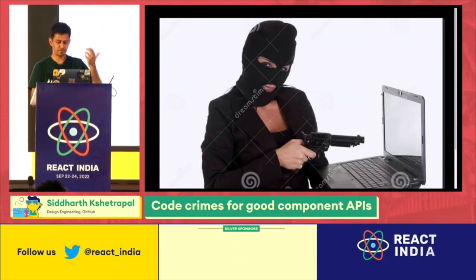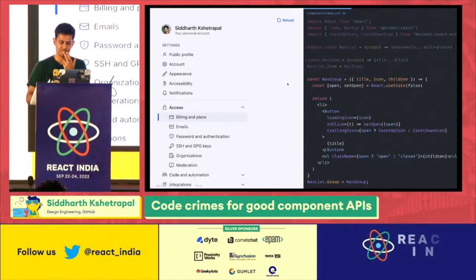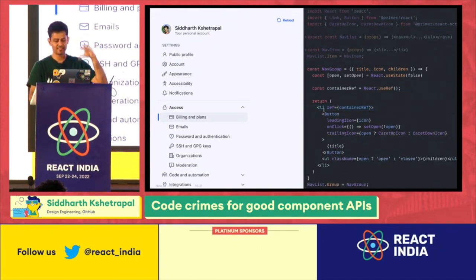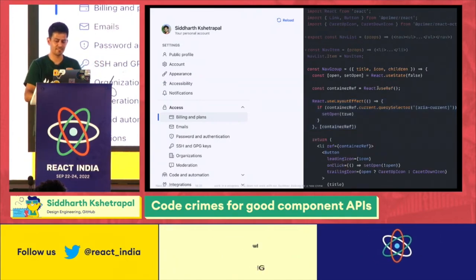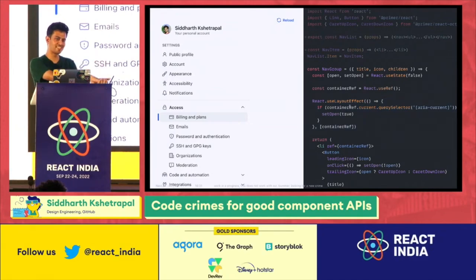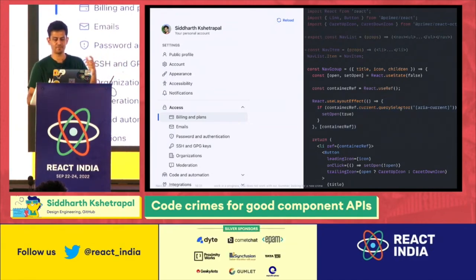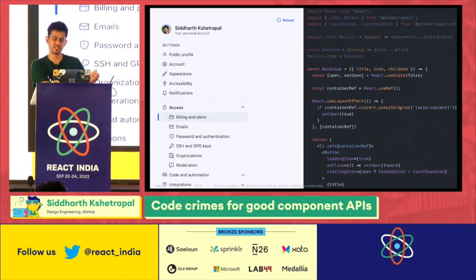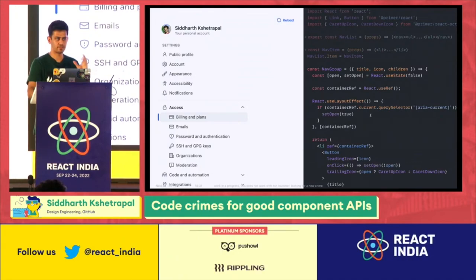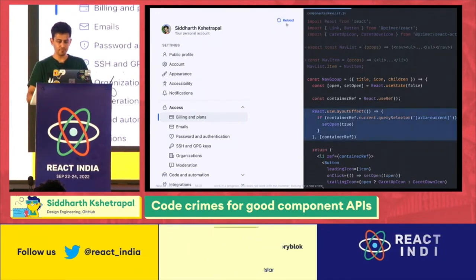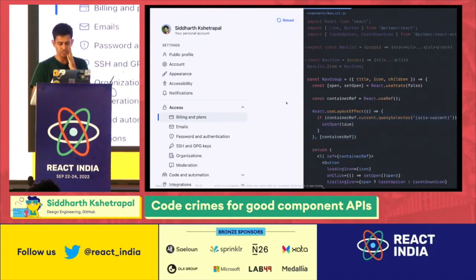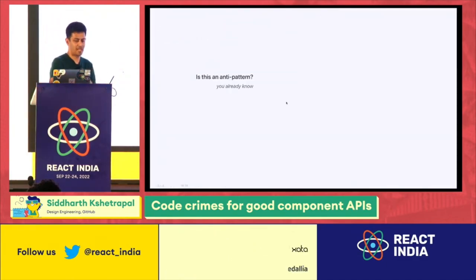So we do different crimes. We create a containerRef and attach it to the highest element of the group. When it renders with useLayoutEffect, we say: if containerRef.querySelector('[aria-current]') exists, open the group. This is powerful because it tests across nested levels — it doesn't matter how the tree is structured, only how it's rendered. This is somewhat of an anti-pattern because we're mixing declarative and imperative code together. But it works great.